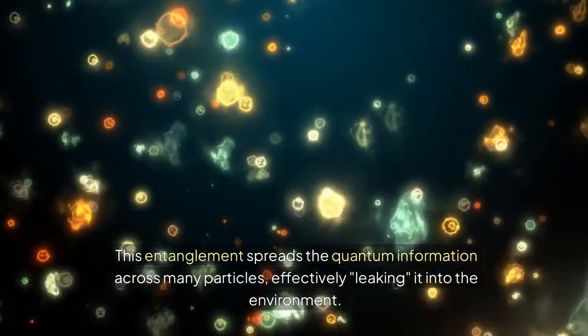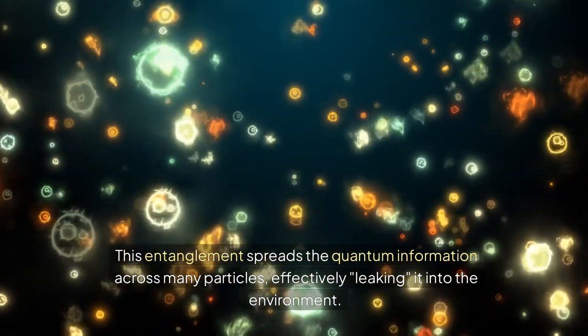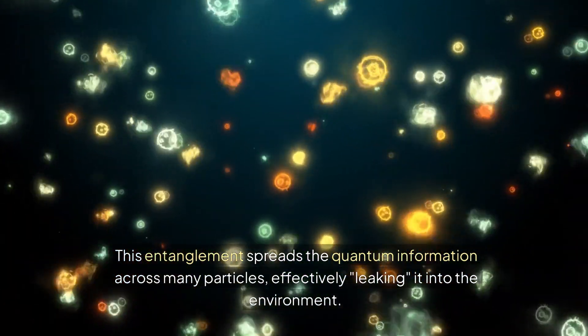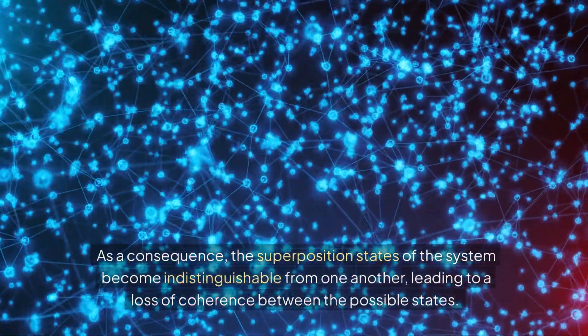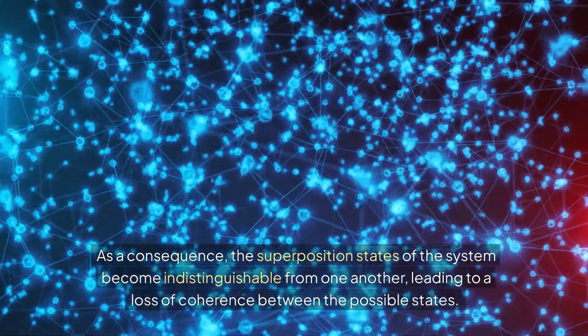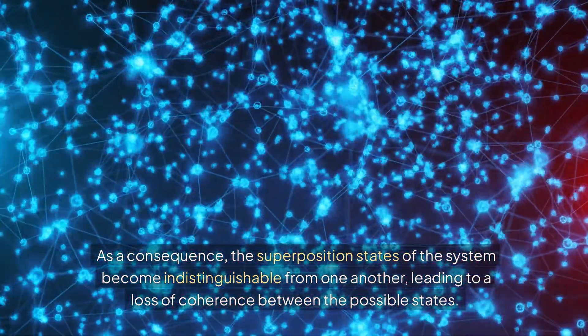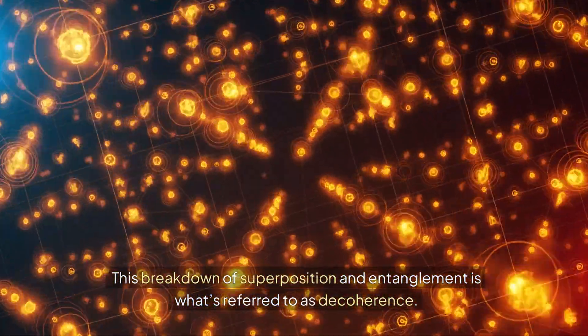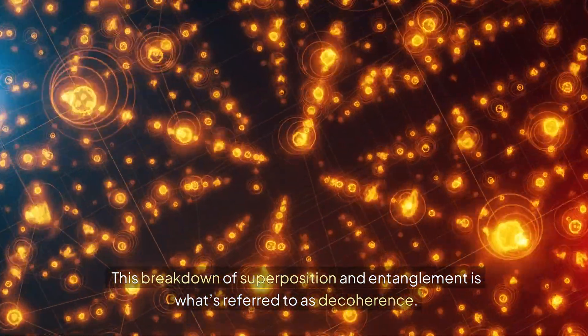This entanglement spreads the quantum information across many particles, effectively leaking it into the environment. As a consequence, the superposition states of the system become indistinguishable from one another, leading to a loss of coherence between the possible states. This breakdown of superposition and entanglement is what's referred to as decoherence.